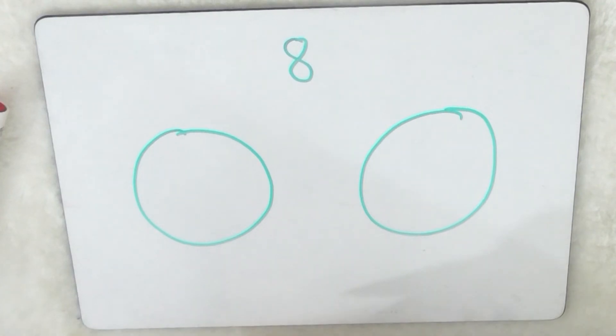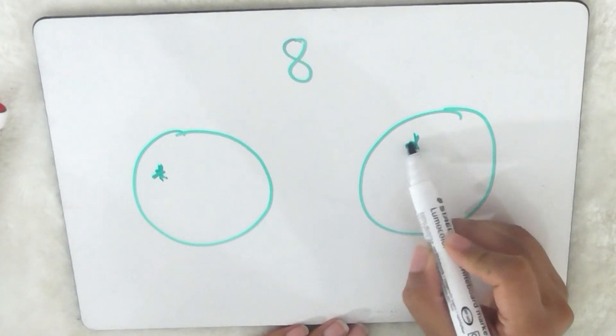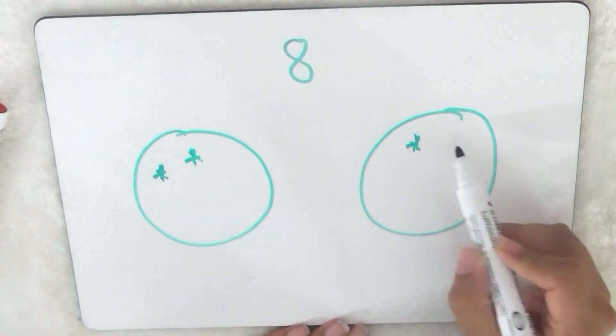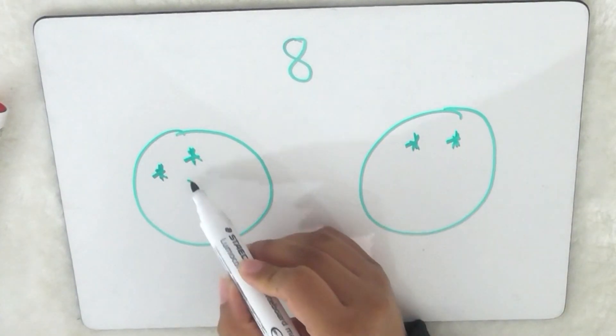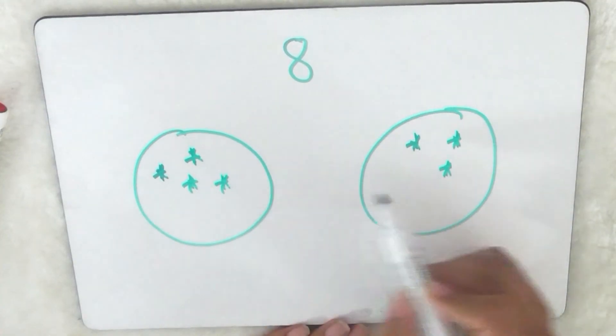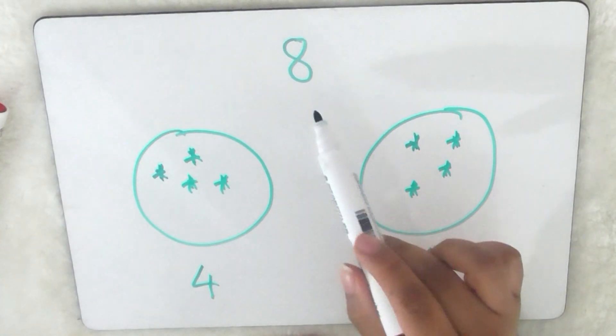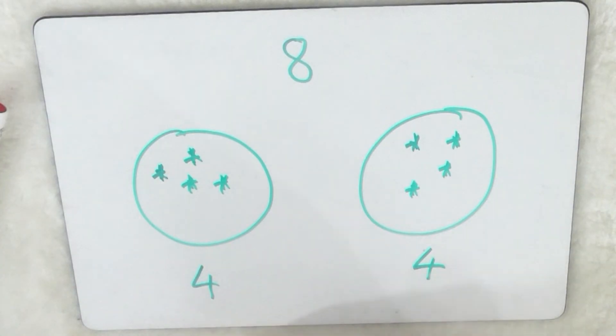So let's find out what half of 8 is. So I've got 8, so I'm going to do 1, 2, 3, 4, 5, 6, 7, 8. And I stop there because I've reached 8. Now I need to check if I've got the same amount in both. 1, 2, 3, 4. 1, 2, 3, 4. So they're both the same. So that means half of 8 is 4. Well done if you got that right.